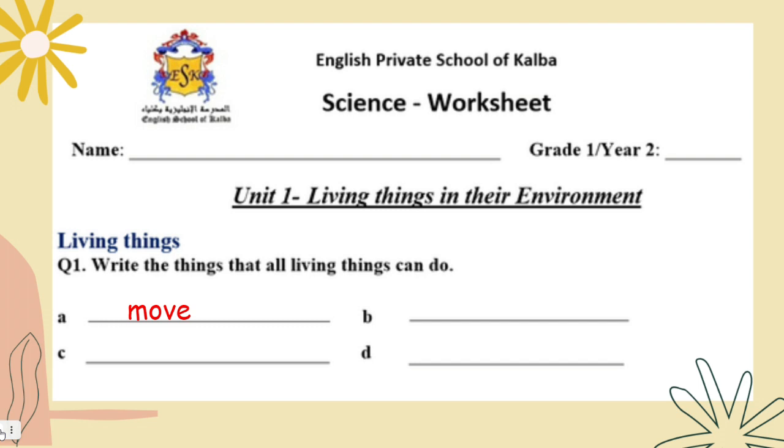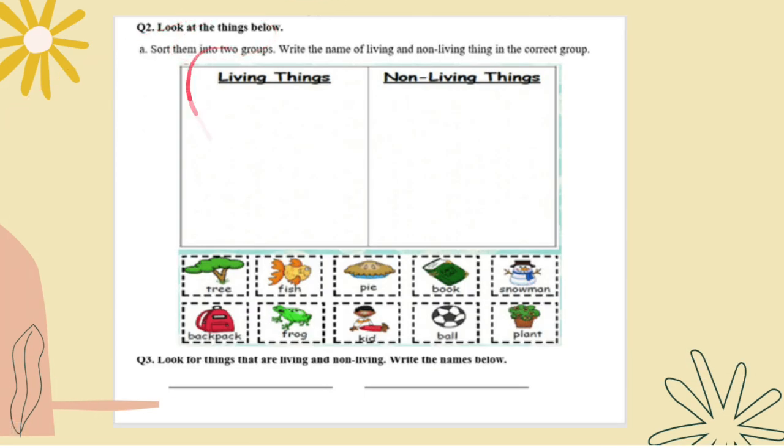You will write down here: living things can move, reproduce, grow, respire or breathe, and can sense things. Now look at these things below. Sort them into two groups. Write the name of living and non-living thing in the correct group.